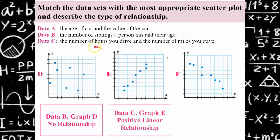Graph E would show the number of hours you drive and the number of miles you travel. So the more hours you drive, the more miles that are covered. That would show a positive linear relationship. Both data sets increase.